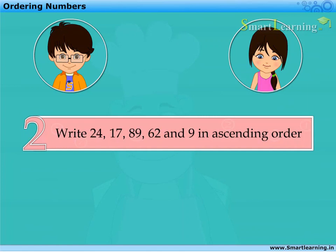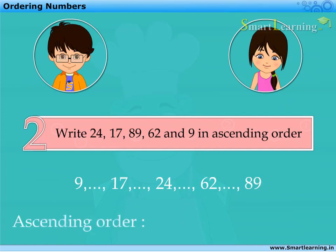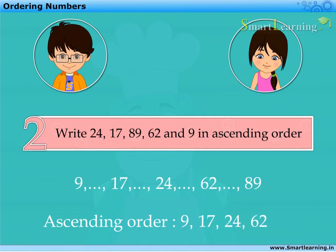While counting from 0, 9 comes first, then 17, then 24, then 62 and 89 comes at the end. Therefore, the given numbers in ascending order are 9, 17, 24, 62 and 89.